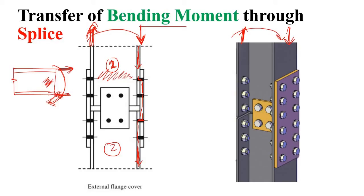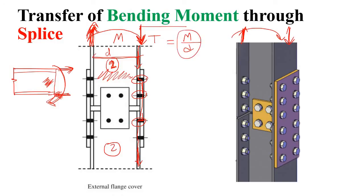To calculate the tensile force from bending moment: if the bending moment is M and the distance between the flanges (depth of the I-section) is d, then the tensile force is simply M divided by d — T = M/d.